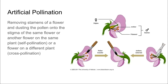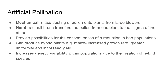Artificial pollination is where we remove the stamens of a flower and dust the pollen onto the stigma of the same flower or another flower. So it can either be self-pollination on the same plant, or if it's on a different plant, we see cross-pollination, and this allows us to inherit the characteristics we like for the flowers and the production of crops. We can either do this mechanically with large blowers, or by hand where we use small brushes that transfer the pollen.